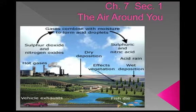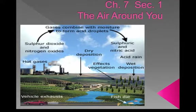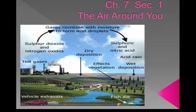In the United States, federal and state governments have passed a number of laws and regulations to reduce air pollution. Many newer cars cause less pollution than older models. However, there are now more cars on the road and more power plants burning fossil fuel than in the past. Unfortunately, the air in many American cities is still polluted. Voluntary measures, such as greater use of public transportation in place of driving, could reduce the total amount of air pollution produced.